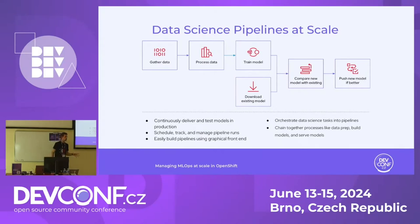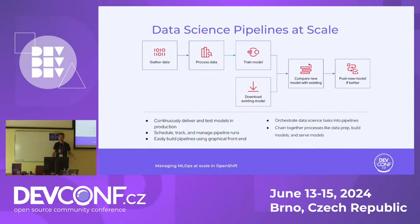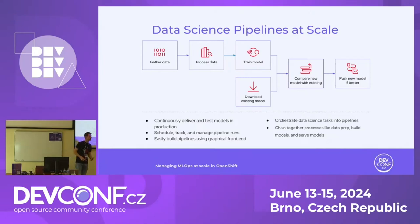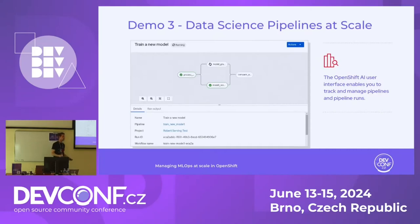We need to automate things using pipelines — data science pipelines at scale. Every single step needs to be put into a pipeline to automate the workflow. Once I have more data or need to retrain, I can trigger the pipeline. You can build whatever pipeline you want to suit your use case.